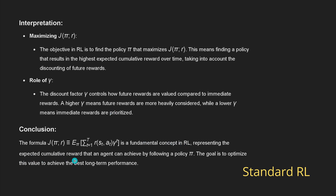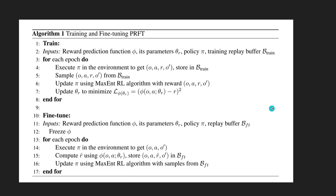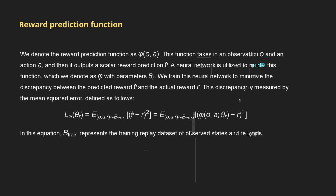In conclusion, this formula J is a fundamental concept in reinforcement learning representing the expected cumulative reward an agent can achieve by following policy π. Now, based on this standard framework, we have our new predictive reward fine-tuning with two phases — training and fine-tuning — and now you have all the parameters in detail.